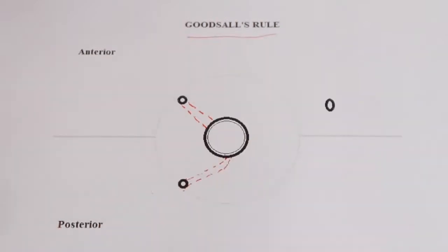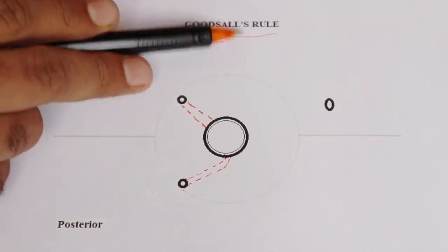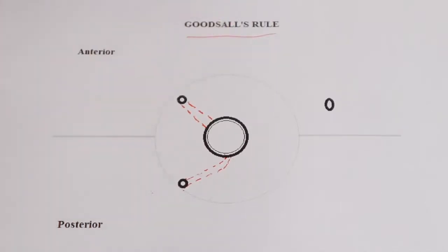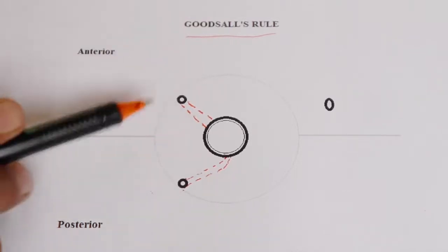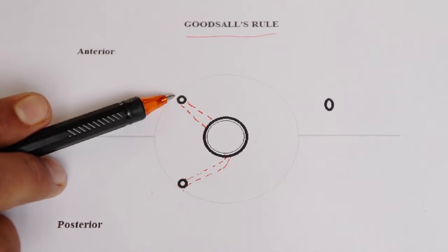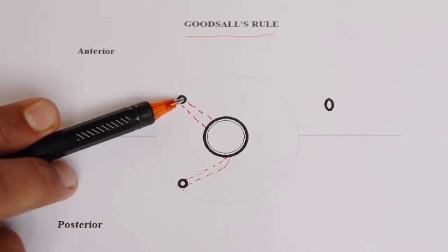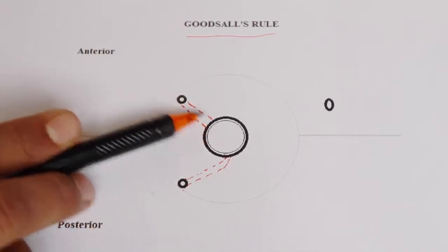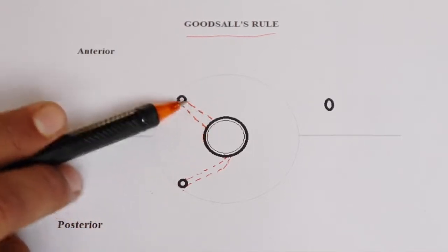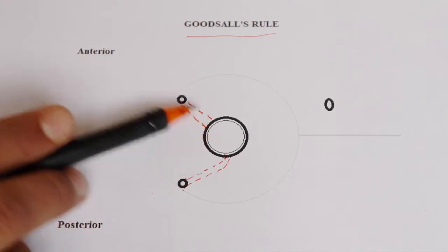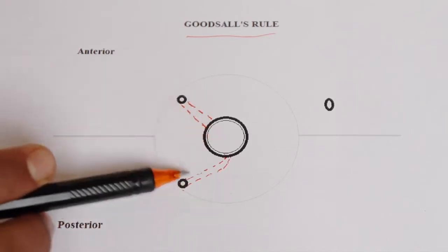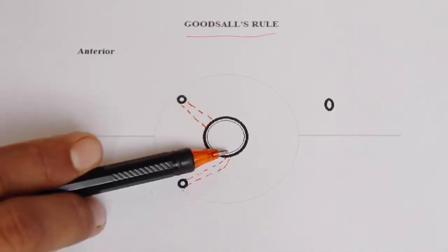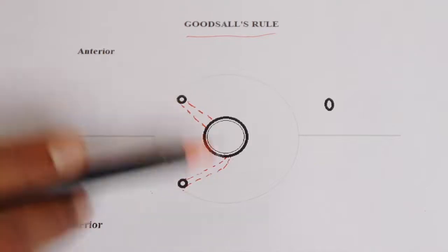This is Goodsall's rule, not a law, so there will be some exceptions. To recap: if the external opening is on the anterior side, the internal opening opens radially. If it is on the posterior side, the track curves and opens in the posterior midline.